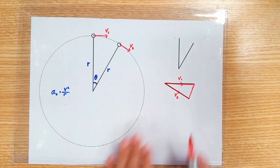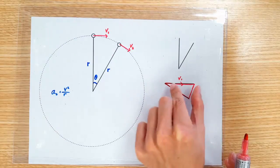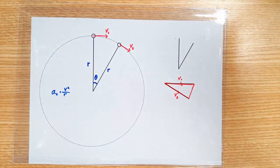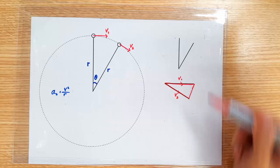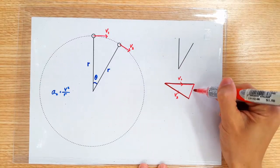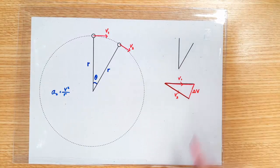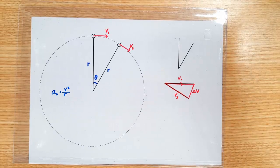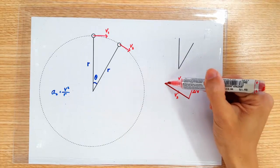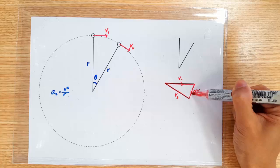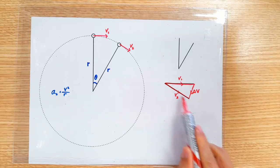Let's draw a vector triangle involving v1 and v2. Now, what does this side of the triangle represent? It represents the change in velocity, delta v. See, the original velocity plus the change in velocity is equal to the final velocity.